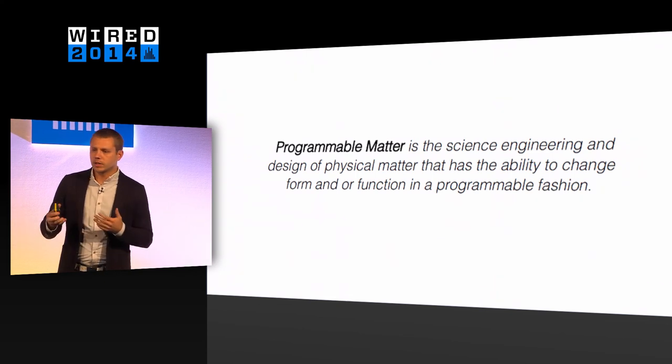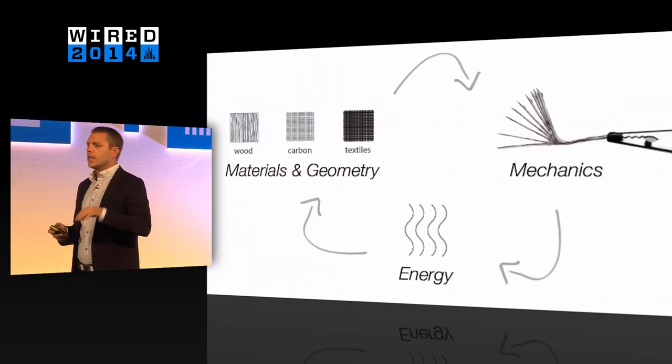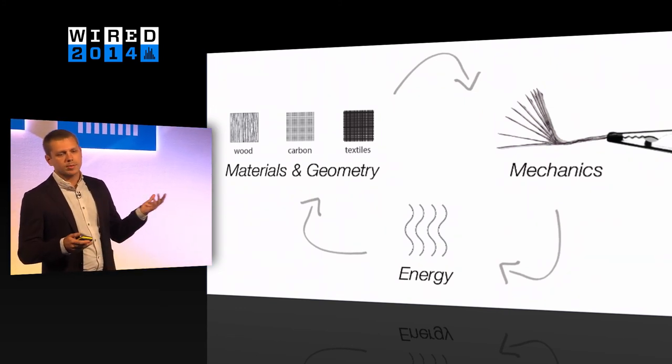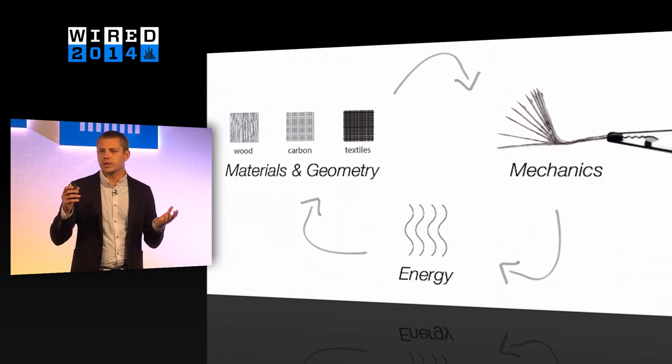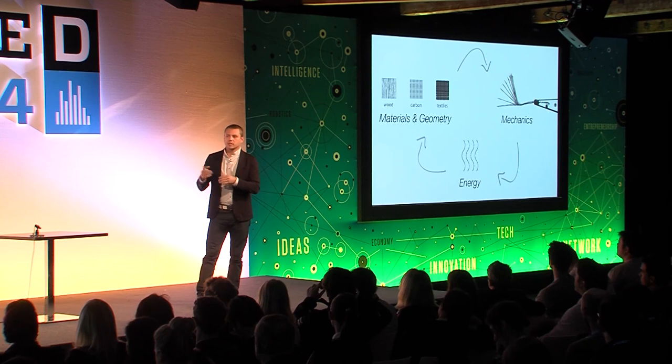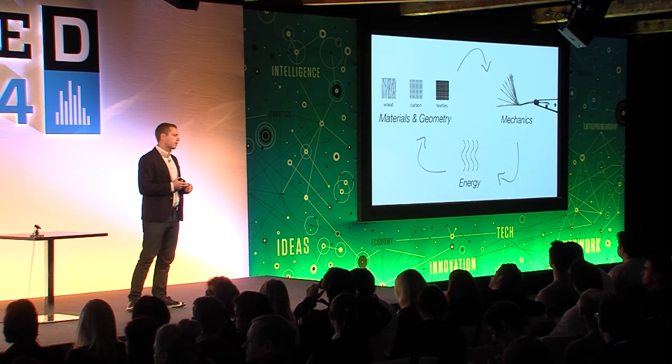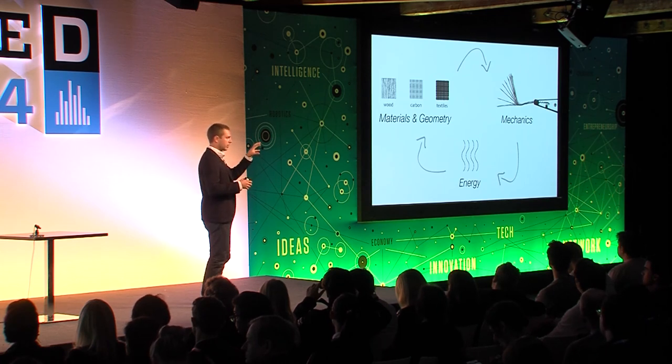That's a topic called programmable matter, which is the science, engineering, and design of physical matter that has the ability to change form and function in a programmable fashion. We have a couple of key ingredients: on one side are materials and geometry — materials respond to energy, they expand, shrink, curl; geometry determines mechanical properties like stiffness or flexibility. The second ingredient is behavior: does it fold, curl, stretch, shrink? And the last ingredient is energy — specifically passive energy sources like heat, light, moisture, and sound, rather than traditional power and electronics.